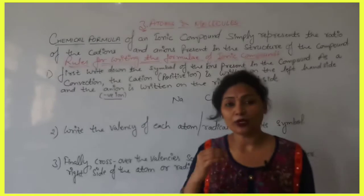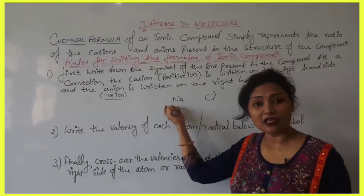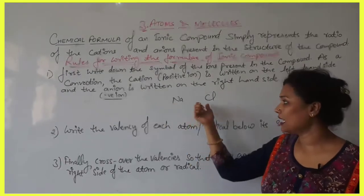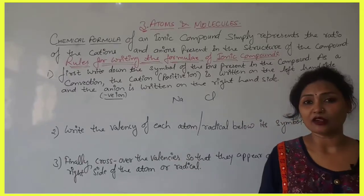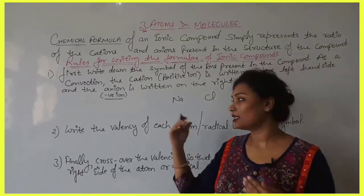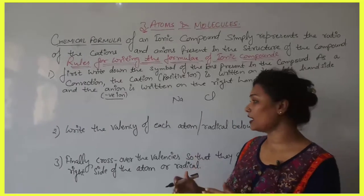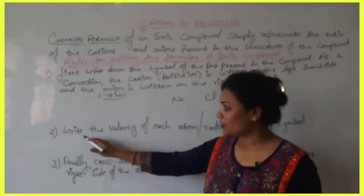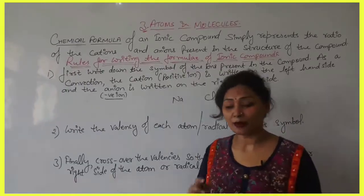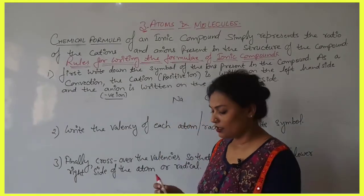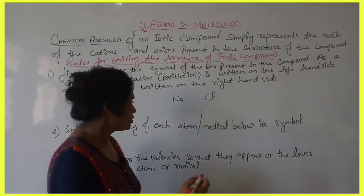Remember: always write the cation on the left side and the anion on the right-hand side. Rule two: After writing the symbols of the elements, write the valency of each atom or radical below its symbol.